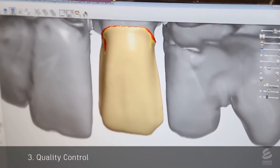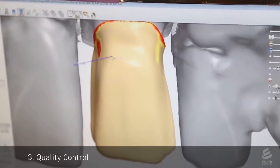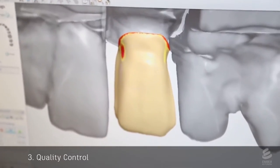This digital mesh is sent to a second technician who performs quality control. This is similar to the previous step, but this technician is more experienced and makes sure that the shape of the tooth looks natural.